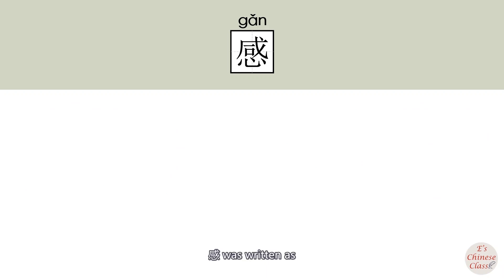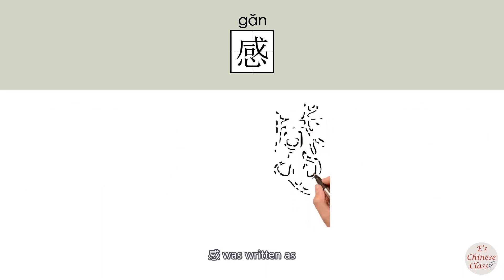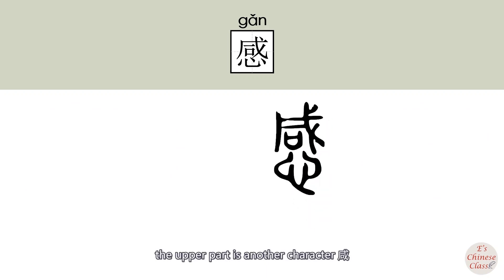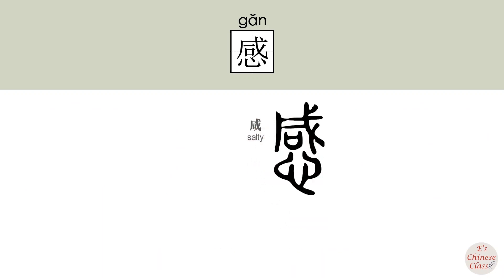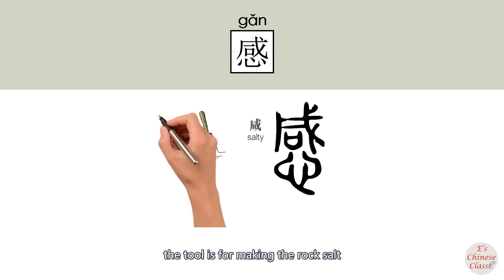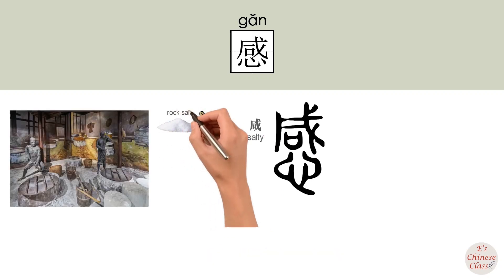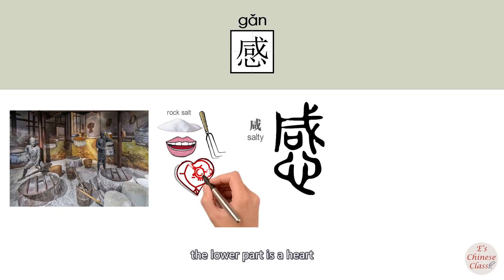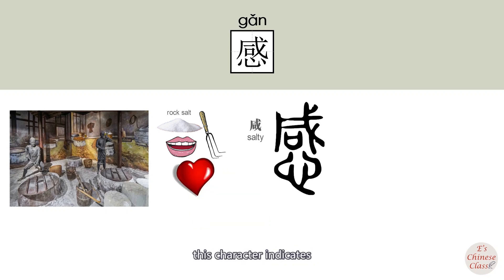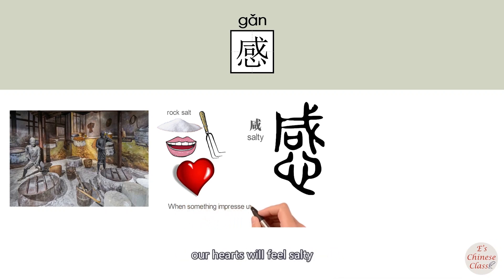In ancient times, 感 was written differently. The upper part is another character, 贤, which means salty. The tool is for making rock salt, and the mouth tasted the salt. The lower part is a heart. This character indicates that when something impresses us, our hearts will feel salty.